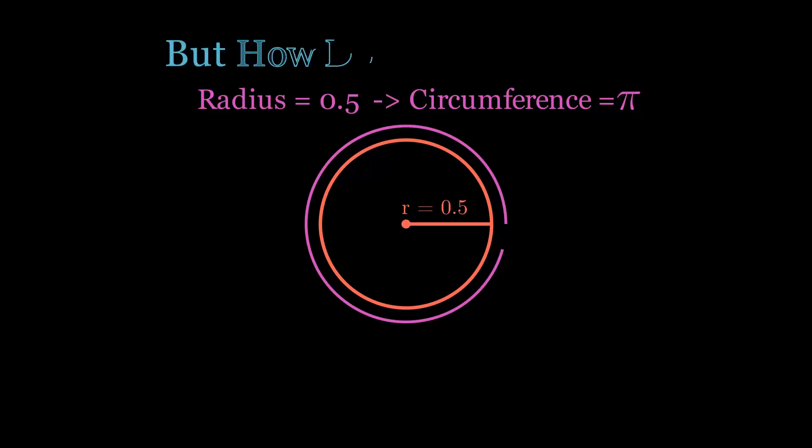Our problem is that we are stuck in a circular loop of needing pi to find the circumference and needing the circumference to find pi. We can break out of that loop by approximating the circle with something that we do know the perimeter of.